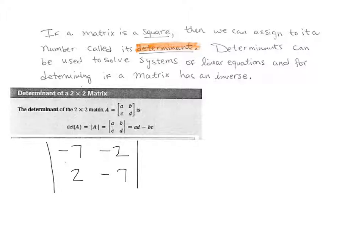Determinants can be used to solve systems of linear equations and for determining if a matrix is invertible. If a matrix has an inverse, then it must have a determinant - actually, it must have a determinant that's not zero. I need to clarify, but that is a video for another time.